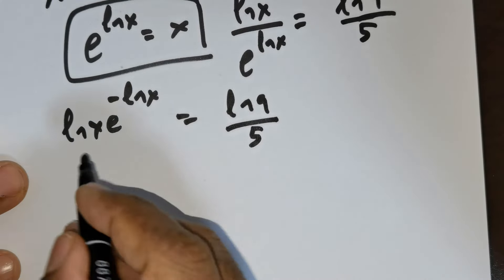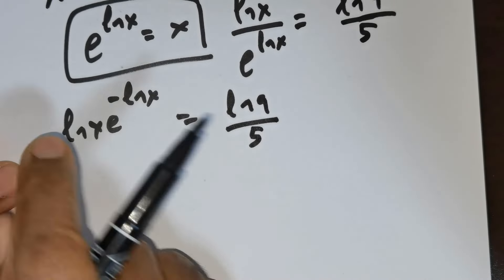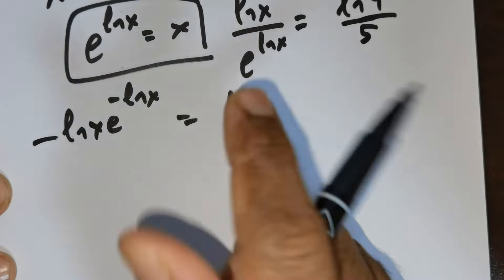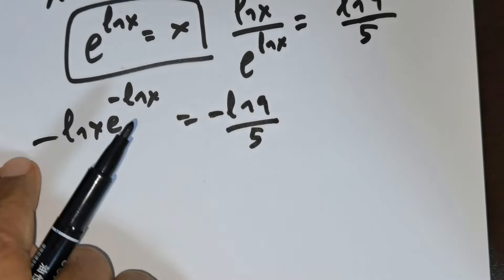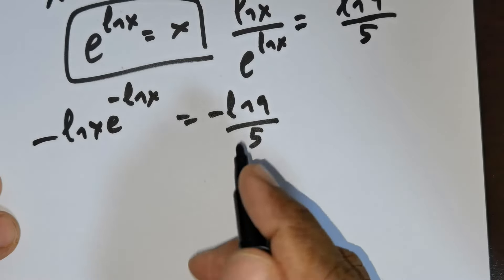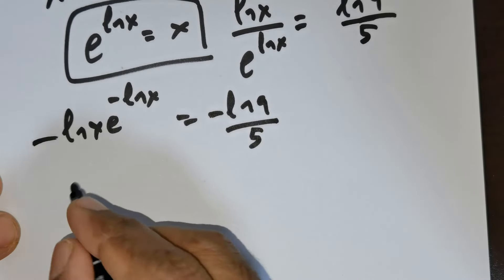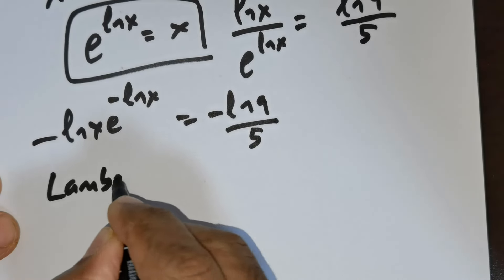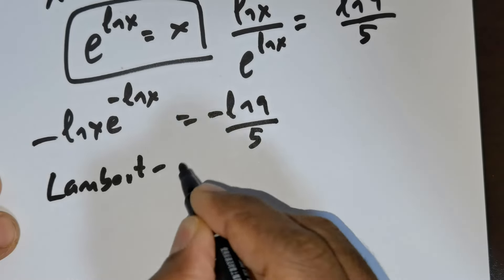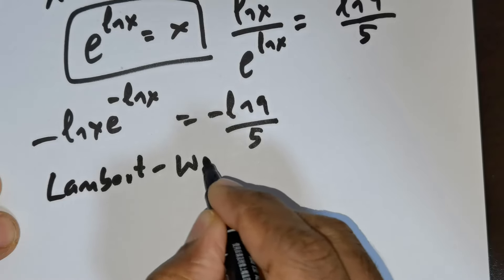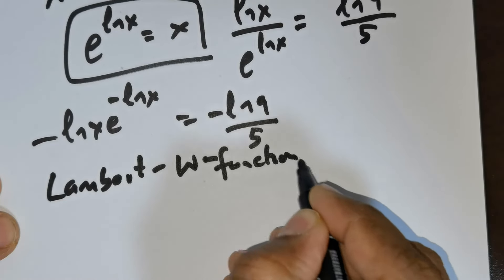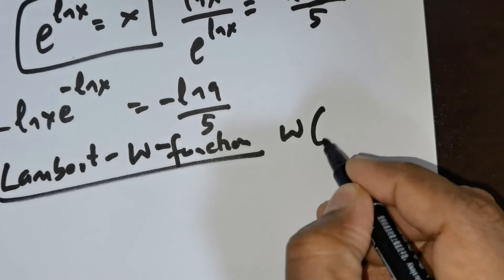Now I want to have a negative sign here, so I am going to be multiplying both sides by negative one. Now let me use what is called the Lambert W function.